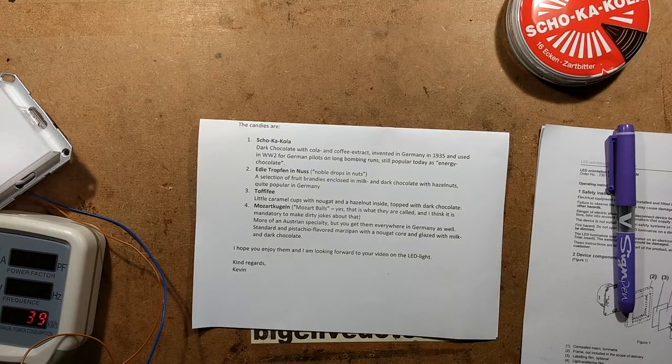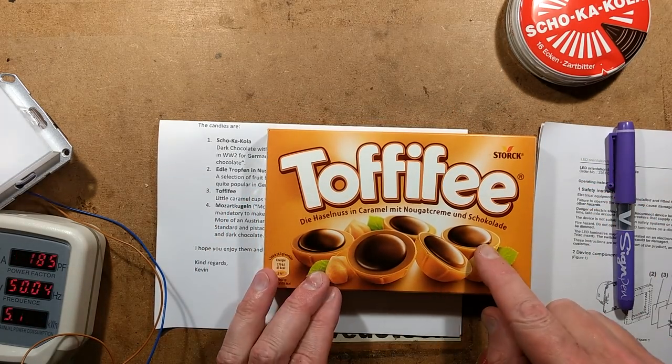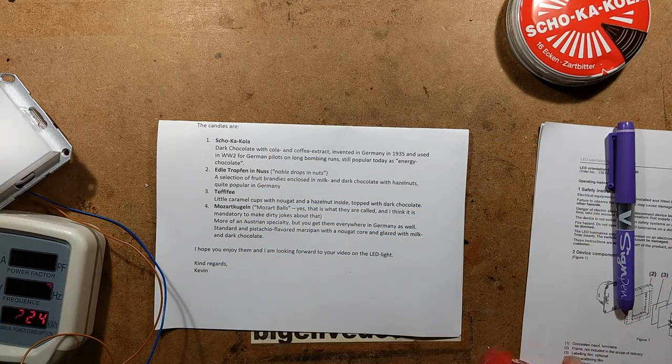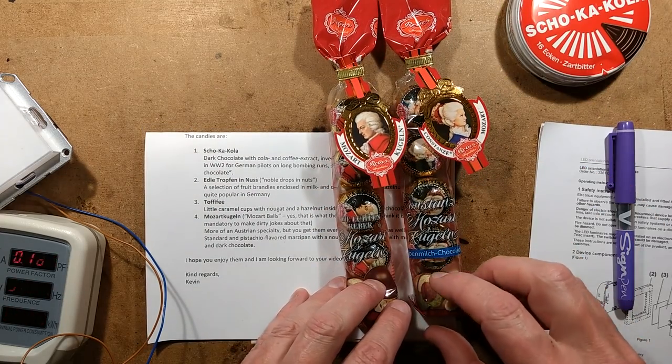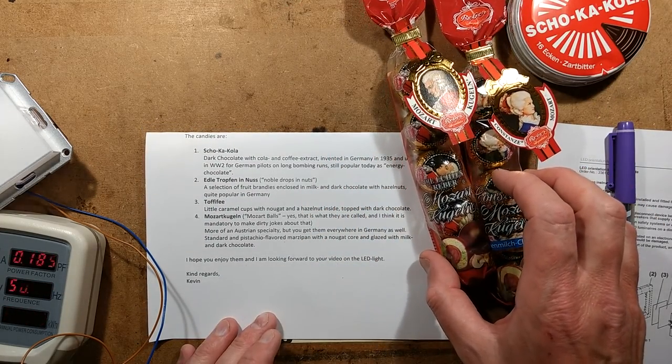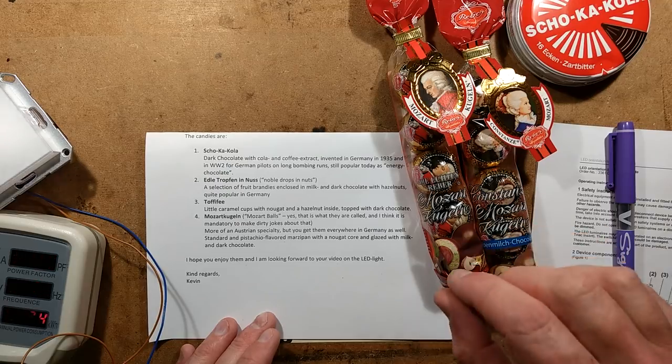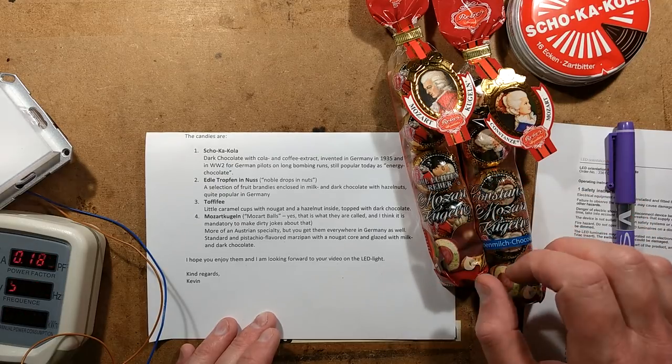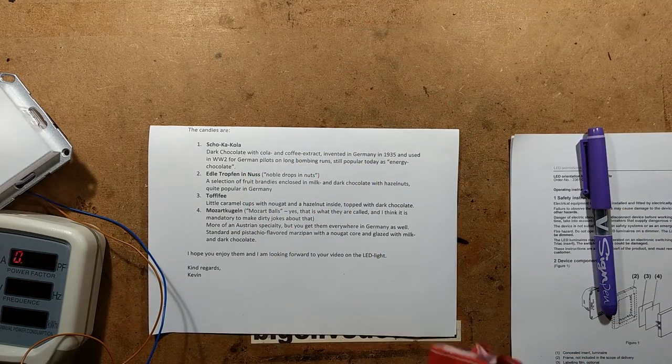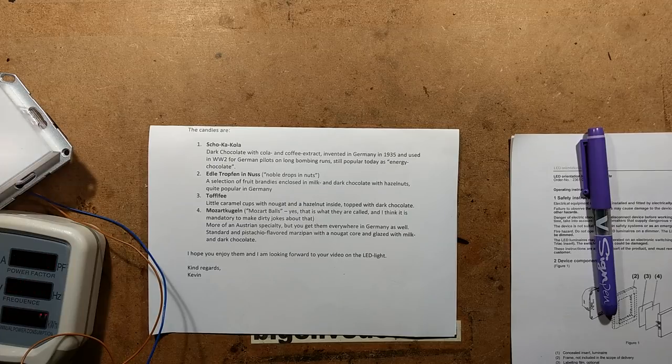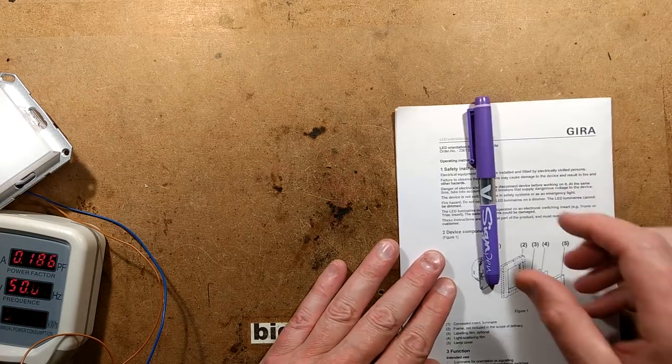The other things Kevin sent were Toffifay, which is fairly standard over here as well, and Mozart balls, which are Austrian but you get them everywhere in Germany. Standard and pistachio flavoured marzipan with a nougat core, glazed with milk and dark chocolate. I love marzipan. I'm going to take a look at these at the end of the video. I won't start nomming and eating them because some people don't like the slurping noise, and it makes it awkward when you're trying to make a video with loud slurping noises.